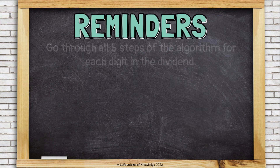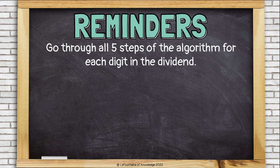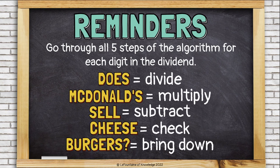Let's review those steps. You go through all five steps of the algorithm for each digit in the dividend. 'Does' means divide, 'McDonald's' means multiply, 'sell' means subtract, 'cheese' means check, 'burgers' means bring down. If you can remember 'Does McDonald's sell cheeseburgers,' then you can remember: divide, multiply, subtract, check, and bring down. Just do those steps for each digit in the dividend and you're done.